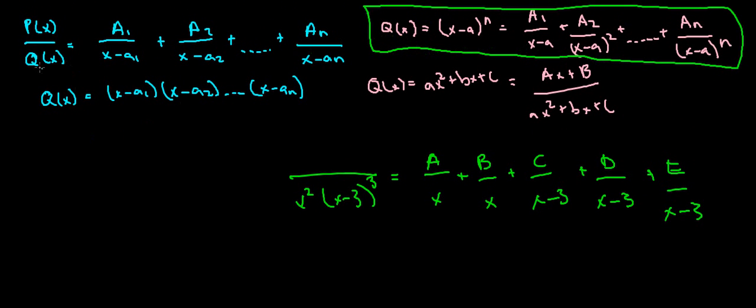If you have in the denominator q to the x something in the form of x minus a to the n, it's got to be broken up like this: x minus a, x minus a squared, plus x minus a to the n. So whatever power it is, that's how many of them I need to do. And each one has its own separate fraction.